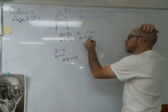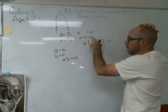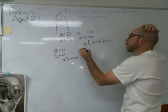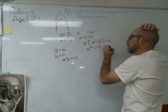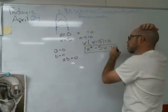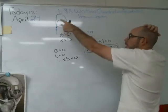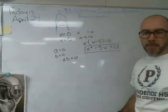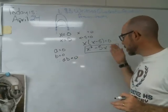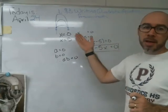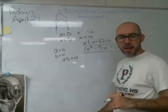x minus 0 is just x, so we get x times (x minus 5) equals 0. That's already quadratic. Expanding, we get x squared minus 5x equals 0. So f(x) equals x squared minus 5x could model this situation. I'm not 100% sure that's the exact formula, but I know it has those roots because I worked backwards.